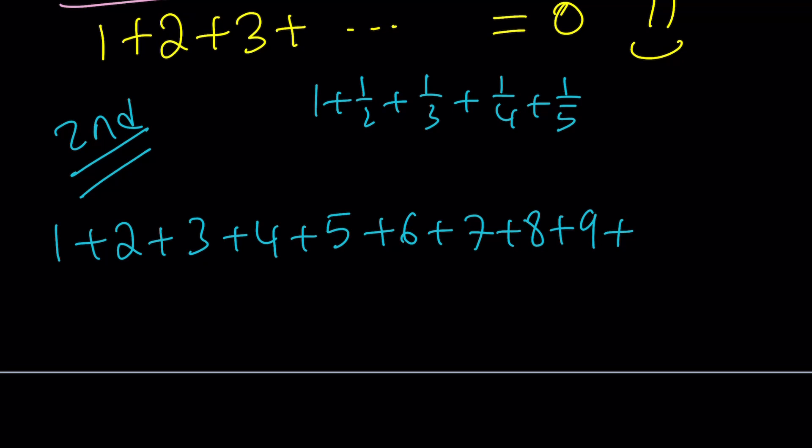And then we can kind of find out. Because if all the terms or the partial sums of my series is greater than a series which is divergent, then obviously my series will be divergent. Because it's going to have a larger value.